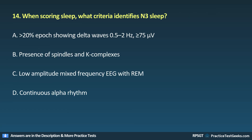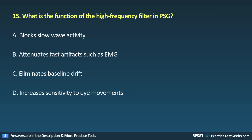Question 14: When scoring sleep, what criteria identifies N3 sleep? A. 20% of epoch showing delta waves 0.5 to 2 Hz, greater than 75 microvolts. B. Presence of spindles and K complexes. C. Low-amplitude mixed-frequency EEG with REM. D. Continuous alpha rhythm.